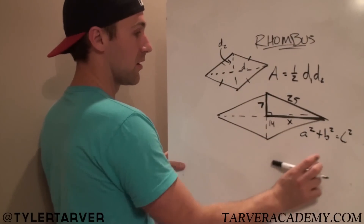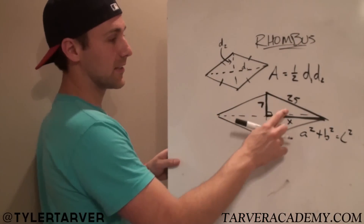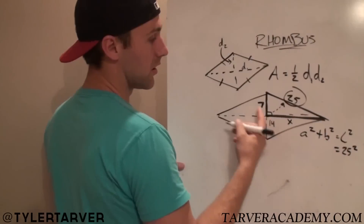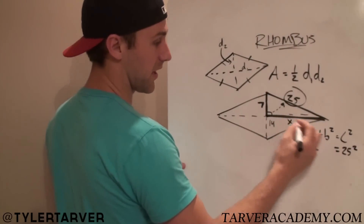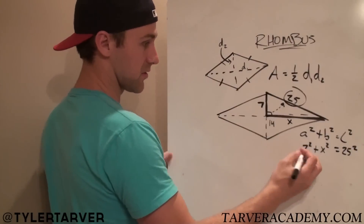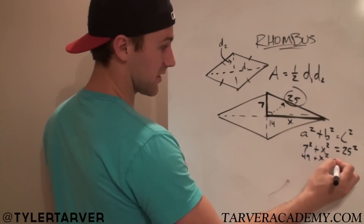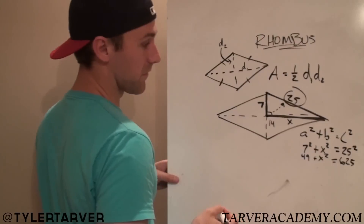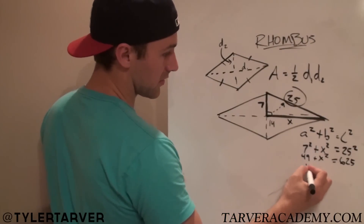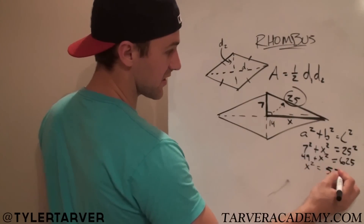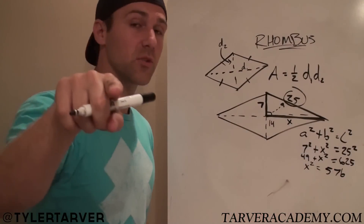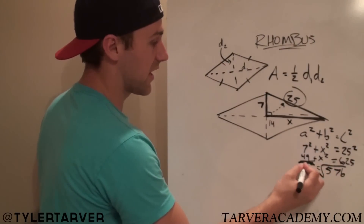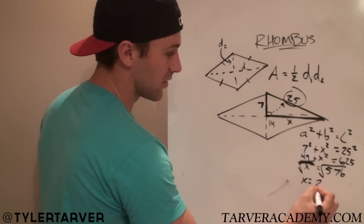Now, the most important part is C — that's our hypotenuse, which is opposite the right angle. So 25 goes in for C squared. We'll make 7 our A, and X our B. So: 7 squared is 49, plus X squared, equals 25 squared which is 625. We subtract 49 from both sides, so X squared equals 625 minus 49, which is 576. The opposite of squaring is square root, so we square root both sides. X equals the square root of 576, which is 24.